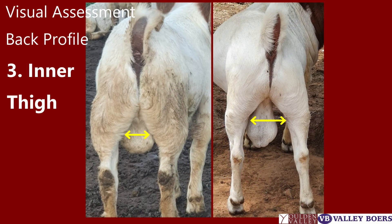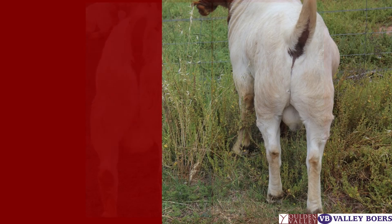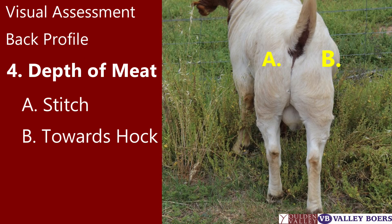This slide clearly shows on the left a buck with good inner muscling and on the right a buck with less inner muscling. This slide shows the depth of meat through the stitch and also down to the hock, showing a full back end.